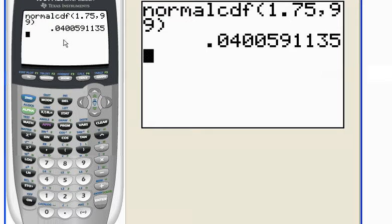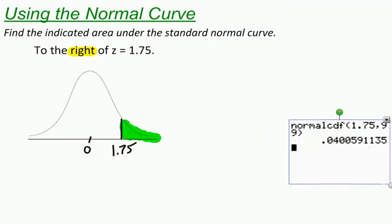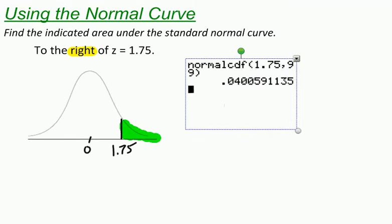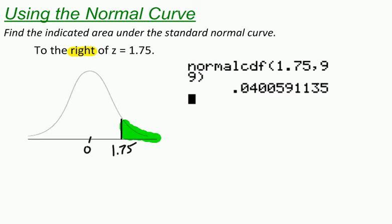And when I hit enter, it gives me the area that I am looking for. So the area of the shaded region right here, to the right of 1.75, is 0.040059. I hope this helps, and have fun in your stats class.